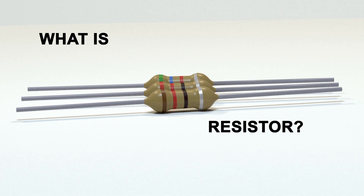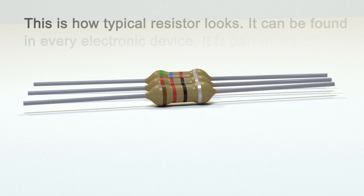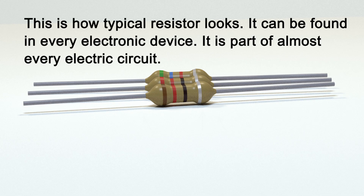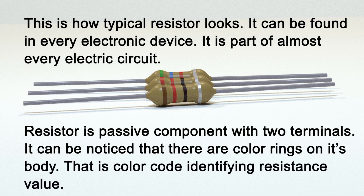What is a resistor? This is how a typical resistor looks. It can be found in every electronic device and is part of almost every electric circuit. A resistor is a passive component with two terminals. It can be noticed that there are color rings on its body — that is the color code identifying the resistance value.